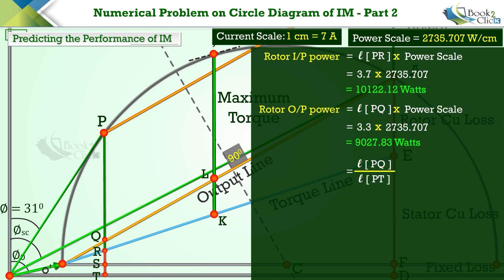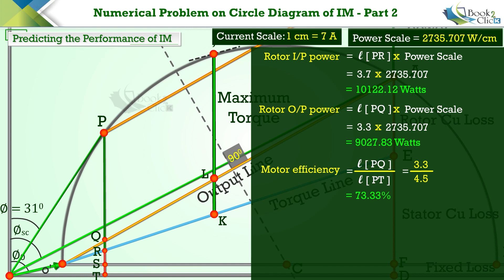Divide the length of line PQ by PT to determine the motor efficiency. The length of PQ is 3.3 centimeters and PT is 4.5 centimeters, so the motor efficiency is 73.33%. Divide the length of PQ by PR to determine the rotor efficiency. With PQ at 3.3 centimeters and PR at 3.7 centimeters, the rotor efficiency is 89.19%.